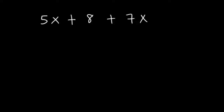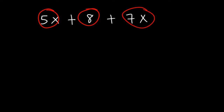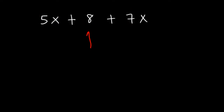So which terms are like terms? There are three terms in this expression: 5x, 8, and 7x. The 8 is a constant term — it doesn't have a variable like x, y, or a, b, c. 5x is a term that contains a variable, in this case x. The number in front of x is called the coefficient.